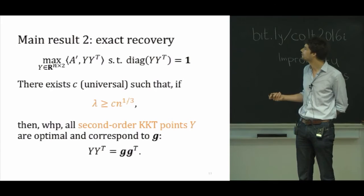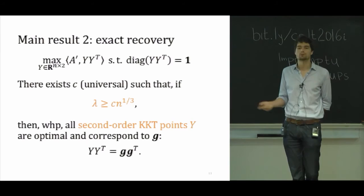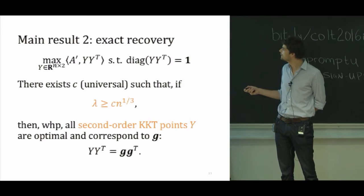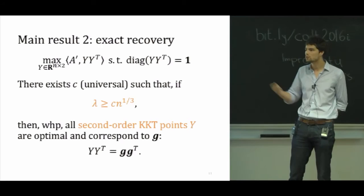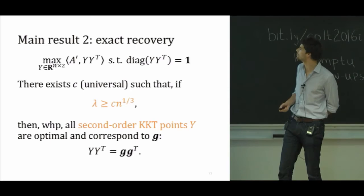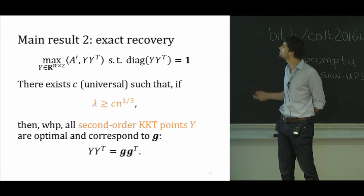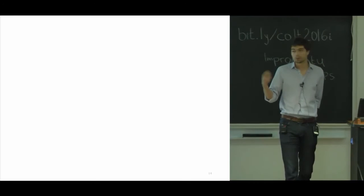And the second result that we have, this one is even more suboptimal with respect to what we are trying to achieve, but it's still a start. It says that if you place yourself in the dense regime, the nicer regime, and you let lambda, the signal-to-noise ratio, grow as n to the 1 over 3, which is quite a bit more than what we were hoping for, square root of log n, but still, then you know that all second order KKT points actually gives you the exact partition. So there is some notion there that, by the way, this n to the 1 over 3 is also a problem. It's definitely a problem in the proof. I don't know if we can get all the way down to the right ratio.